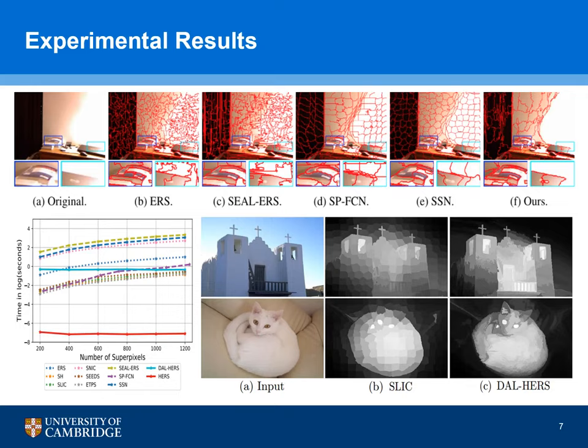Finally, we showcase some experimental results comparing our method to a number of state-of-the-art methods. On the top row, our method produces superpixels that are highly adaptive, as opposed to other state-of-the-art classical and deep learning methods. On the bottom right row, by using our method as a preprocessing tool for saliency detection, we obtain much smoother segmentation results compared to the classical SLIC method. On the bottom left, our method also enjoys highly advantageous computational efficiency compared to a number of other classical and deep learning methods.